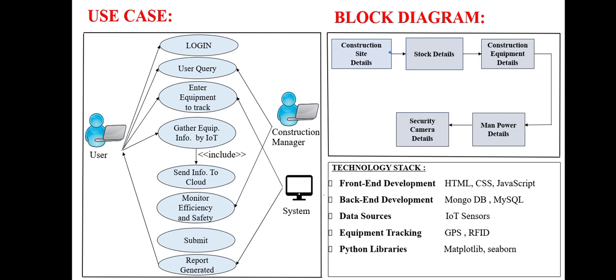The user clicks the submit button, and the dashboard gathers the user query and generates a report. In the block diagram, we see various kinds of details involved in the dashboard. Construction site details provide information like location, place, latitude, and longitude.